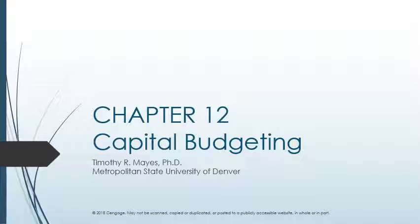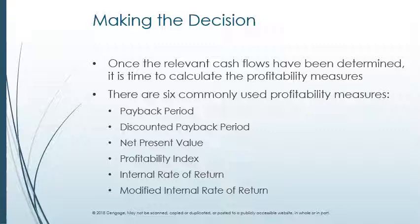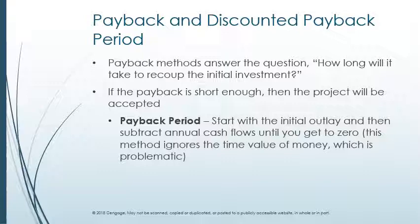Today we will discuss how to make the decision using tools. Once the relevant cash flows have been determined, it is time to calculate the profitability measures. There are six commonly used profitability measures: payback period, discounted payback period, net present value, profitability index, internal rate of return, and modified internal rate of return. Financial managers have a number of tools at their disposal to evaluate profitability. We have summarized these six methods and will look at the Supreme Shoe problem using each method.